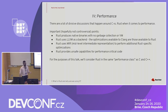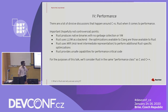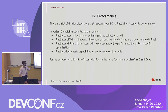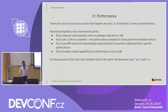Rust also uses an intermediate representation, which allows for Rust-specific optimizations before compiling down to LLVM. When writing performance-critical code that really relies on some kind of unsafe pointer magic, Rust also provides unsafe capabilities to drop down to that level and do what we need to do. We can think of Rust as generally in the same performance class as C and C++.